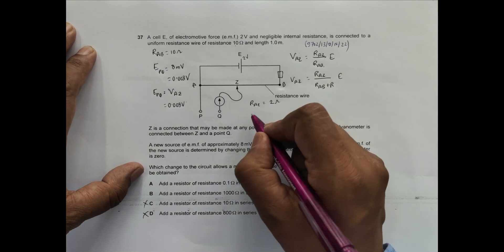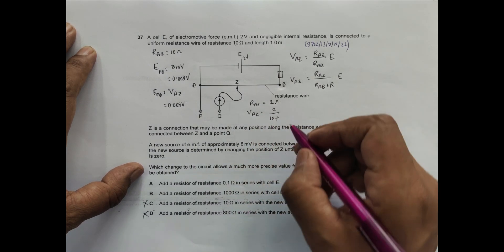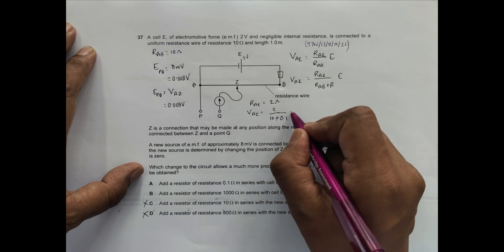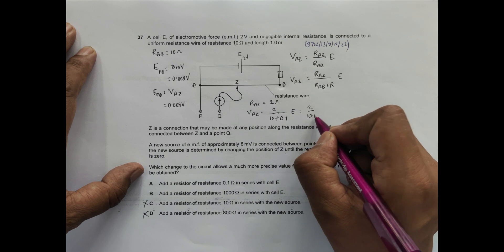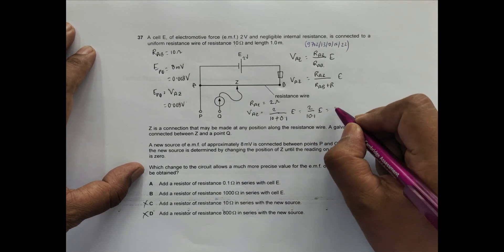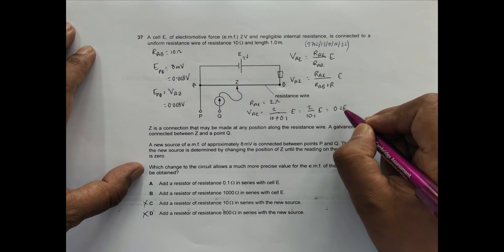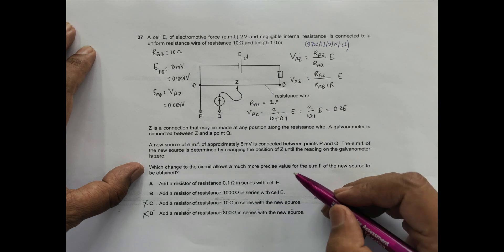2 divided by 10 plus 0.1, times E. That becomes 2 divided by 10.1 times E, which is approximately 0.2E if I add 0.1 ohms in series.